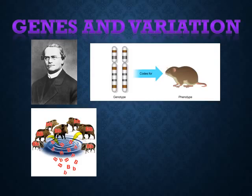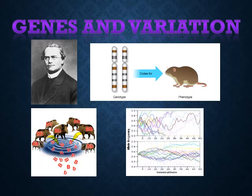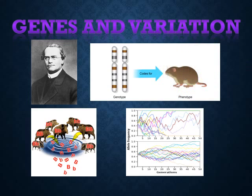Genetic variation and evolution are both studied in populations. A population is a group of individuals of the same species that may produce offspring together. A gene pool consists of all the genes, including all the different alleles of each gene, present in a population. Allele frequency is the number of times an allele occurs in a gene pool compared to the total number of alleles in that pool for the same gene. Evolution, in genetic terms, involves a change in the frequency of alleles in a population over time.